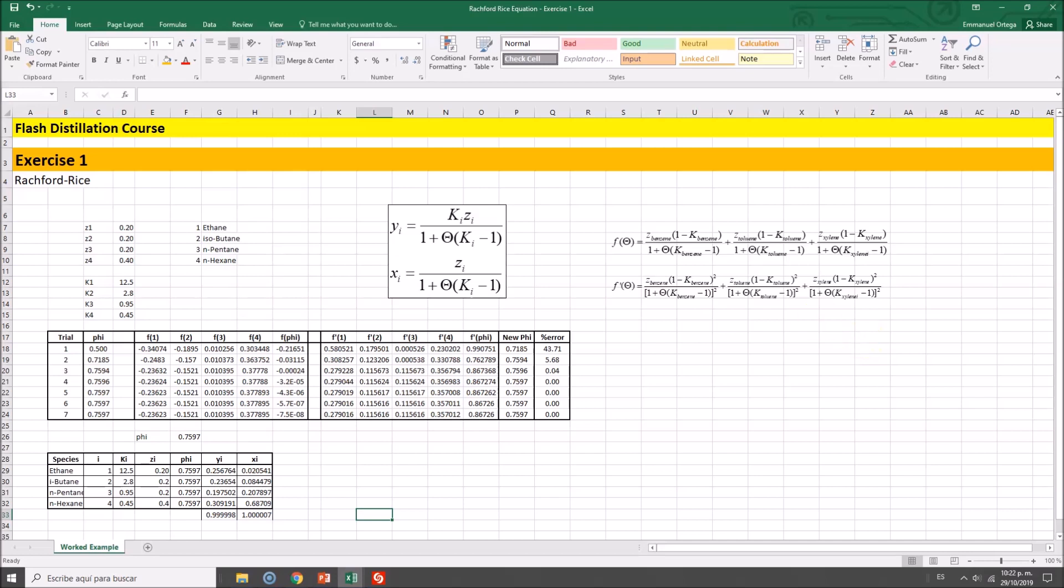Yes. This is Flash Distillation Course, Exercise 1, Rachford Rice Equation. I got 1, 2, 3, 4, which is ethane, butane, pentane, n-hexane, compositions, K values, which I obtained from the DePriester chart, and I'm going to start as you remember.